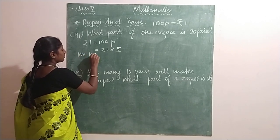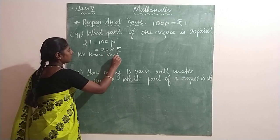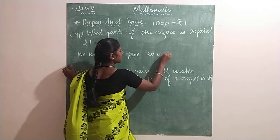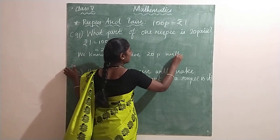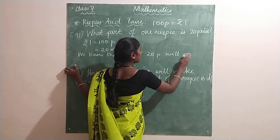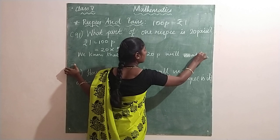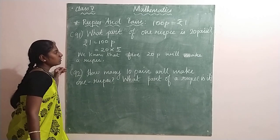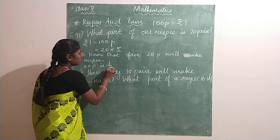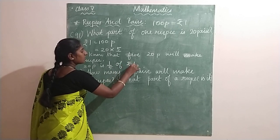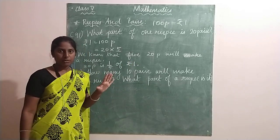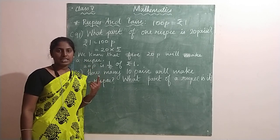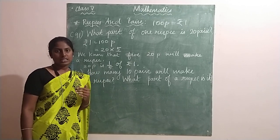So you can write: we know that twenty paise will make a rupee—fifty paise is one by five of one rupee. Is it clear? Five twenty paise is making one rupee. So what part is one twenty paise? It is one by five. Is it clear?